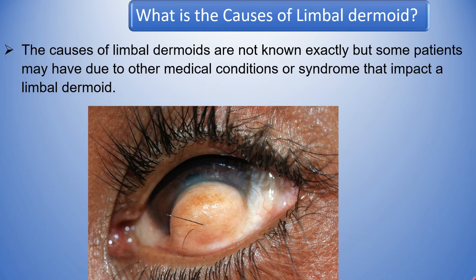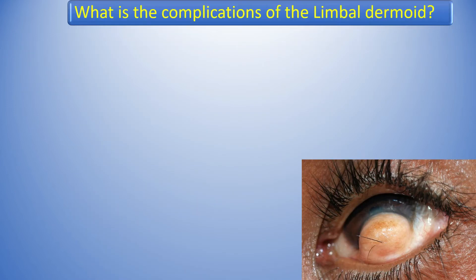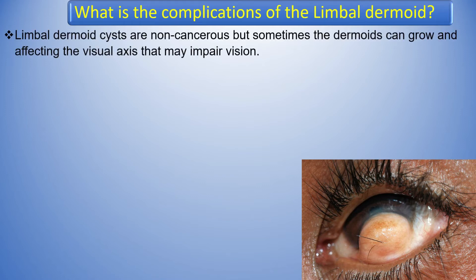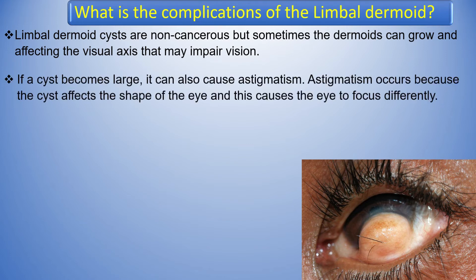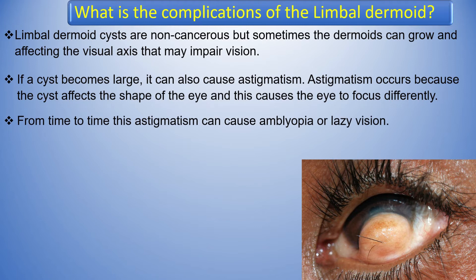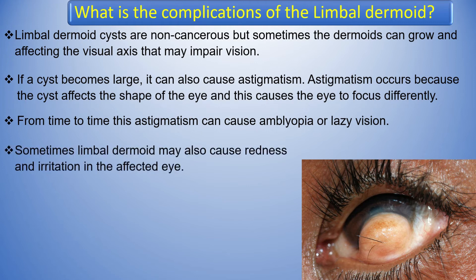Limbal Dermoid cysts are non-cancerous, but sometimes the dermoid can grow and affect the visual axis, which may impair vision. If a cyst becomes large, it can also cause astigmatism. Astigmatism occurs because the cyst affects the shape of the eye, causing the eye to focus differently. From time to time, this astigmatism can cause amblyopia, or lazy eye. Sometimes, Limbal Dermoid may also cause redness and irritation in the affected eye.